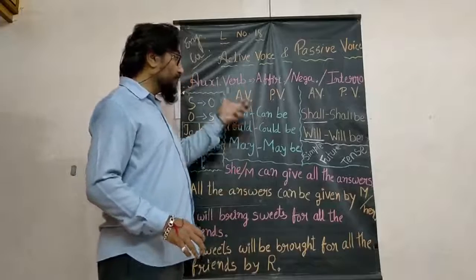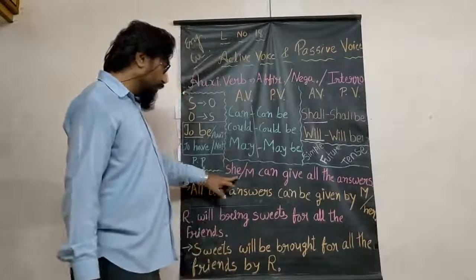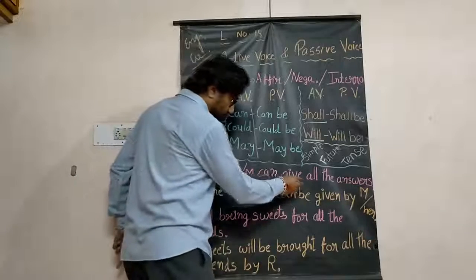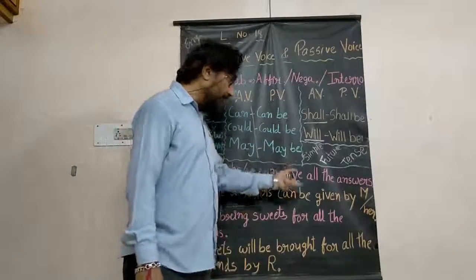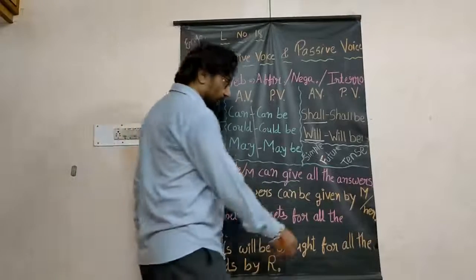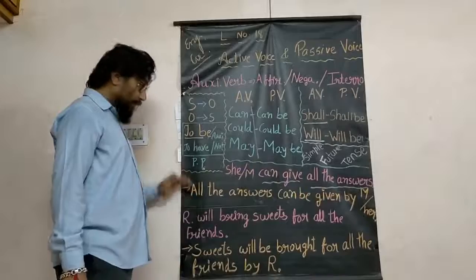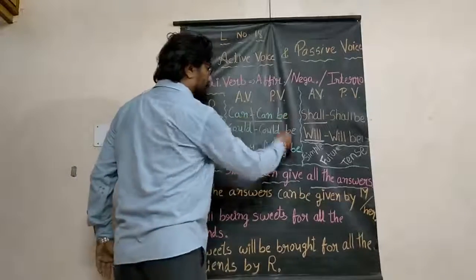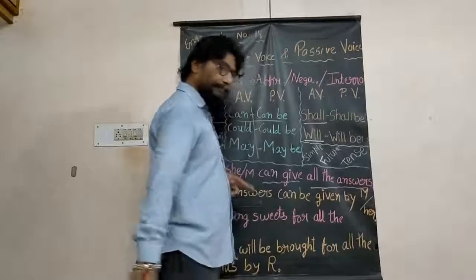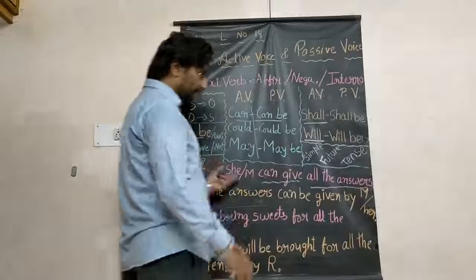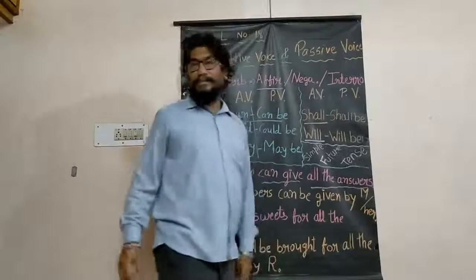With these auxiliary verbs, we convert active voice to passive voice. Two examples are given. First: 'She or Mira can give all the answers' — this is an affirmative sentence. 'All the answers' is O1 and becomes the subject. 'Can' is converted into 'can be'. Next comes the past participle of 'give', which is 'given'. Then 'by Mira' or 'by her'. This completes the auxiliary verb with affirmative sentence.